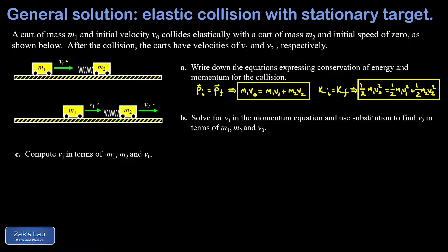In part b, we solve for v1 in the momentum equation and then use substitution to find v2 first. Isolating v1: subtract the m2*v2 term from both sides and divide by m1. That gives v1 equals (m1*v_naught minus m2*v2) divided by m1. Now we can substitute this expression into the kinetic energy equation to solve for v2.